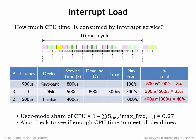But if the keyboard deadline is 3,000 microseconds, let's see what happens. In a 3,000-microsecond interval we need to service two disk requests, three printer requests, and one keyboard request, for a total service time of 2×500 + 3×400 + 800 = 3,000 microseconds. Just made it!